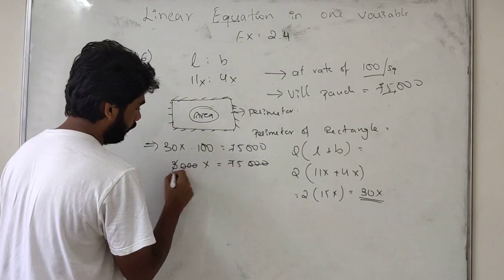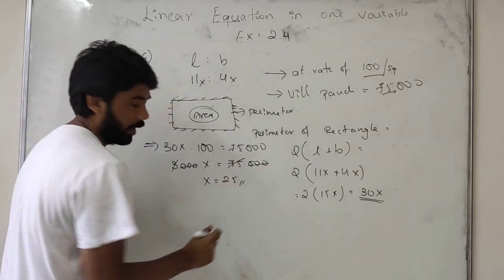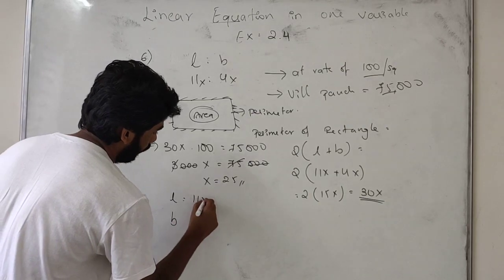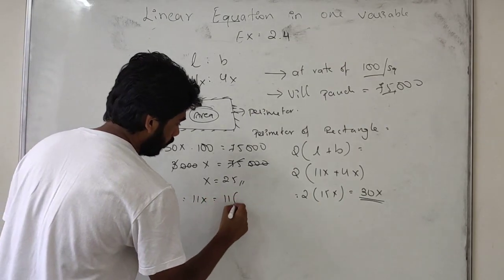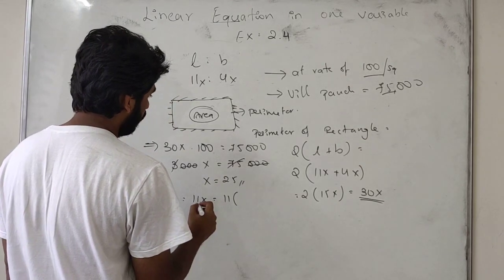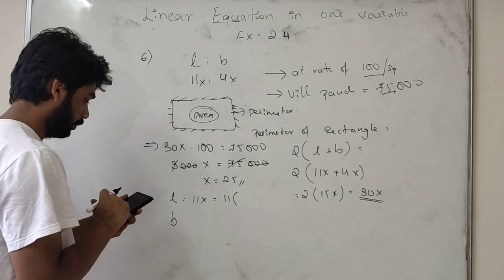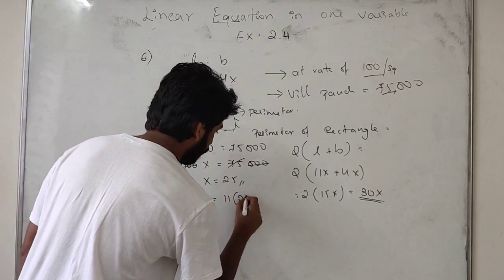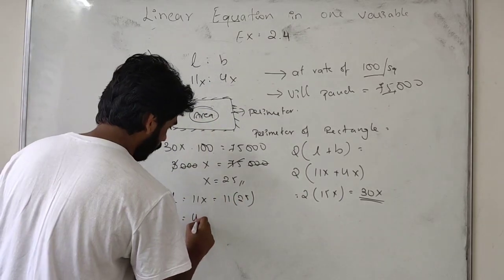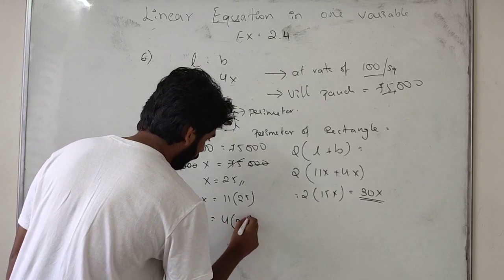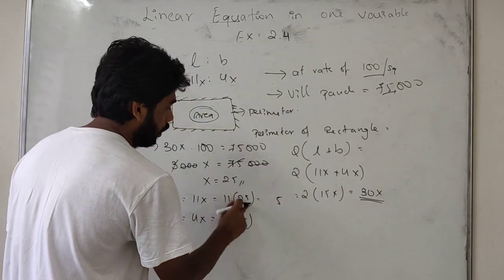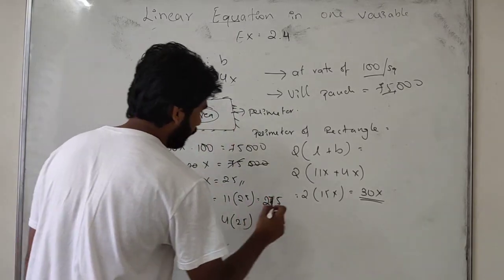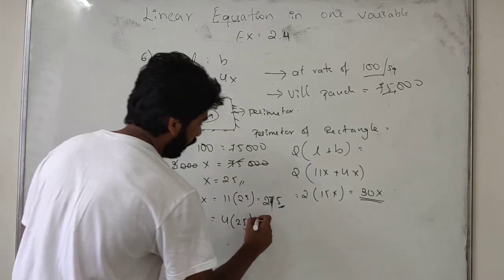Now we have to find x, and from x we have to find length and breadth. So what we will get here - 30x into 100 is equal to 75,000. 3000x is equal to 75,000. Dividing by 1000, we get 3x is equal to 75. 3 divides 75 to give 25. So x is equal to 25. Length is 11x, which means 11 into 25 equals 275 meters. Breadth is 4 into 25, which equals 100 meters.